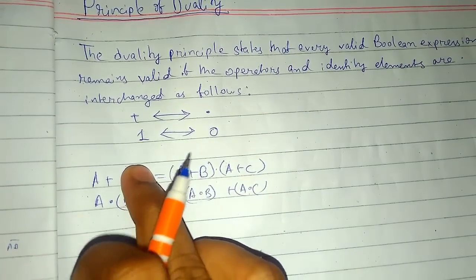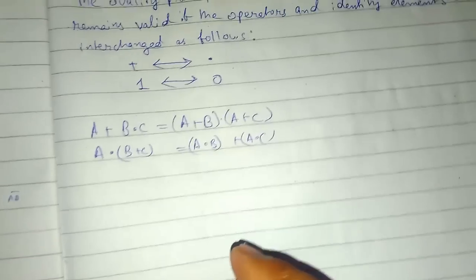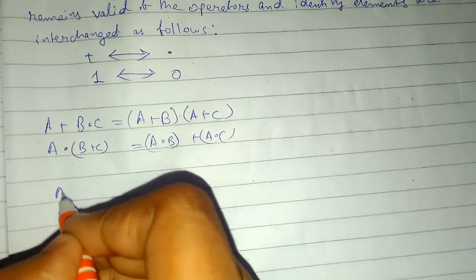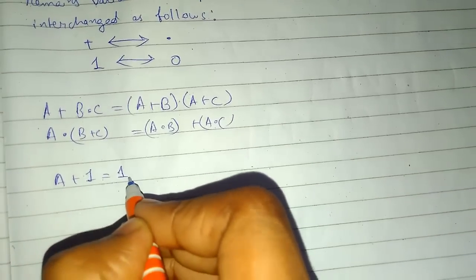The dual of this is this and the dual of this is this. Similarly, in the same way, if there is a plus one, we know this is a valid expression.